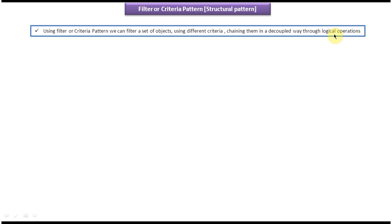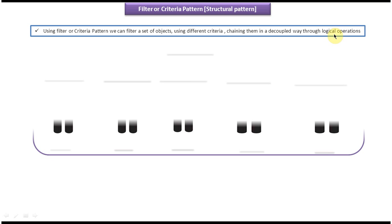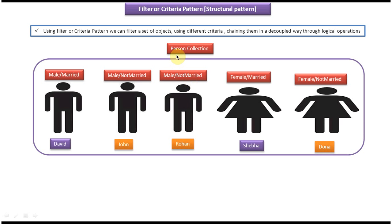To explain the filter or criteria design pattern, I have taken the example of a person collection. This collection contains five person objects — three persons are male and two persons are female. David, John, and Rowan are male; Sheba and Donna are female.